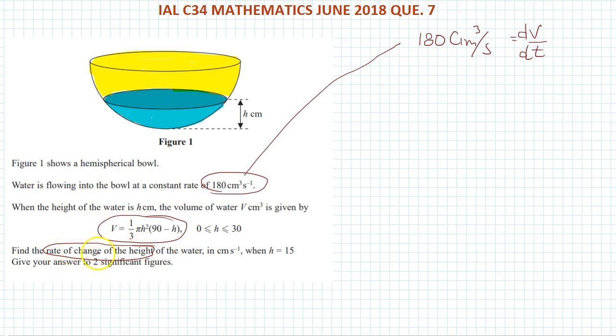Another thing is find the rate of change of the height in centimeter per second. Centimeter is a height and second is a time, so it's dH over dt. So this we have to find. This thing is given.